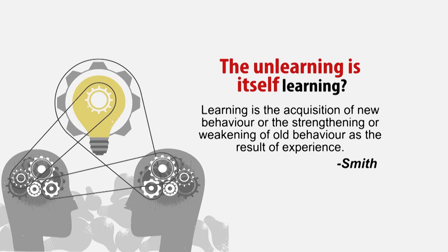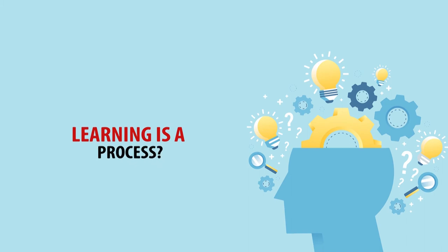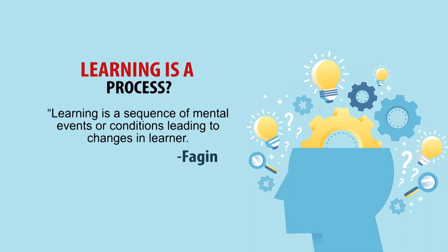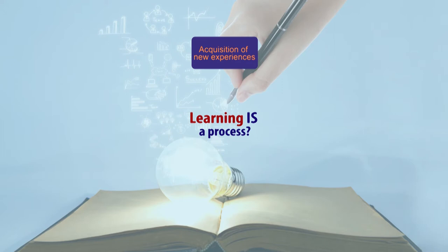So following Smith, we can say that unlearning is also a form of learning. The next question is: is learning a process or a product? According to Gagné, learning is a sequence of mental events or conditions leading to changes in the learner. Gagné says learning is a process in which different mental conditions or events bring changes in the learner. The first step in this process is the acquisition of new experience — new knowledge, new facts, anything new.